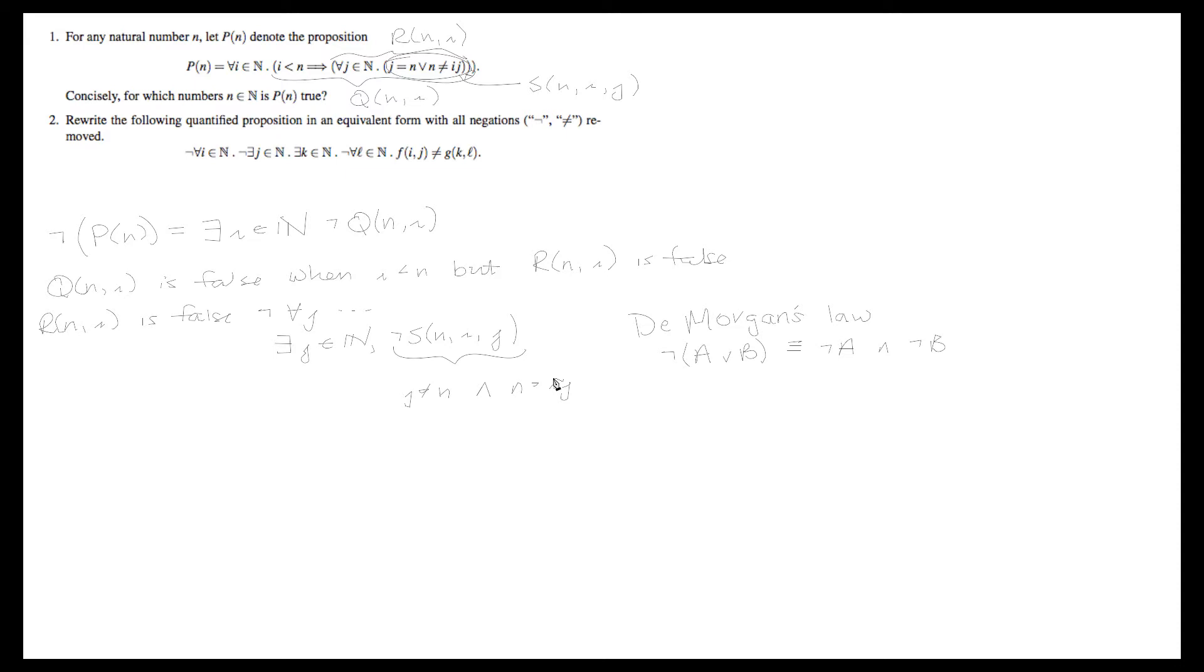So altogether, we know that P of n is false when there exists an i such that i is less than n but there exists a j such that j is not equal to n and n equals i times j.